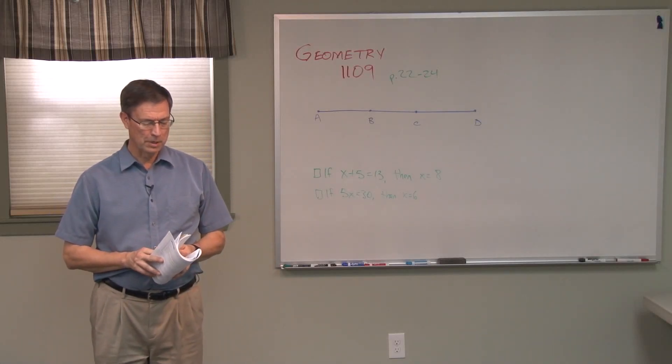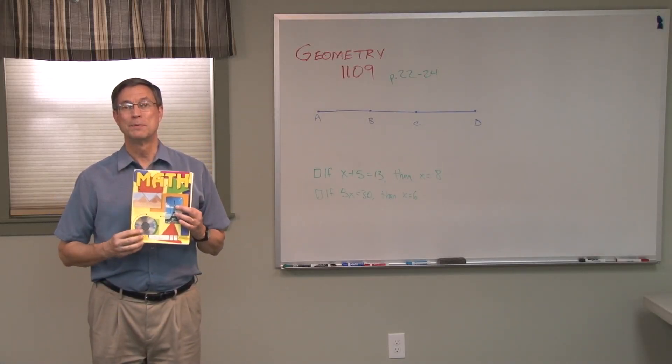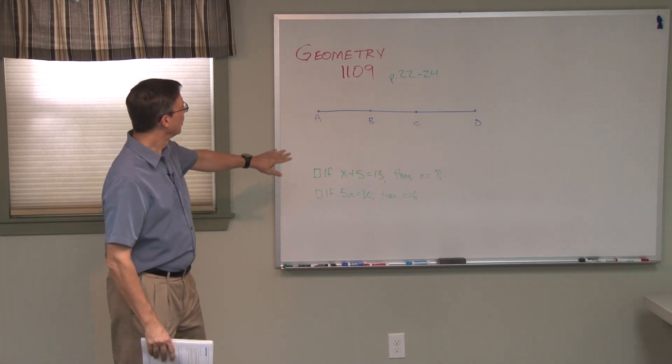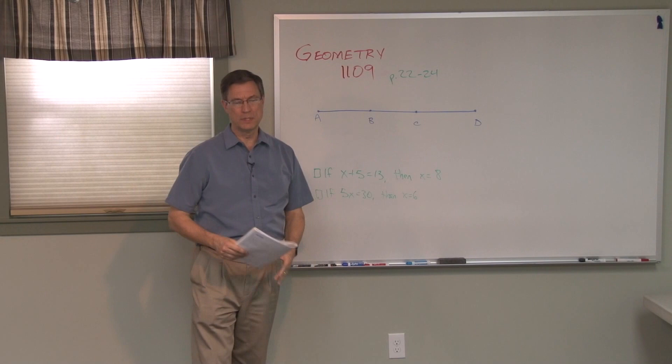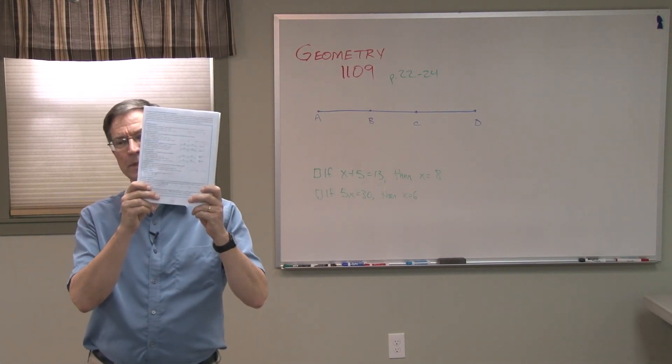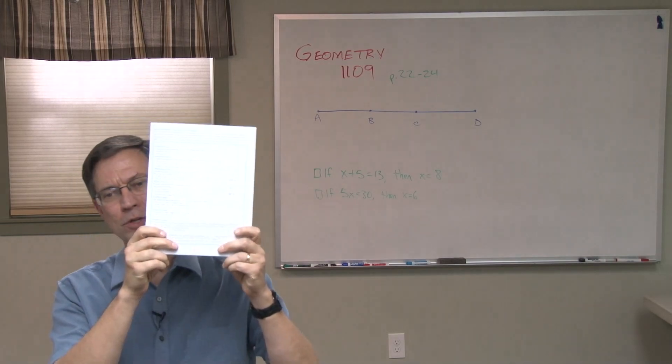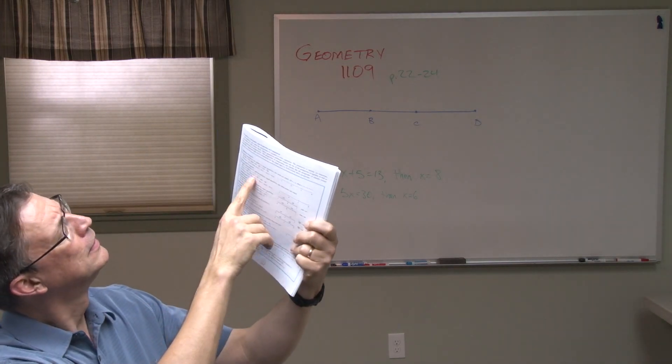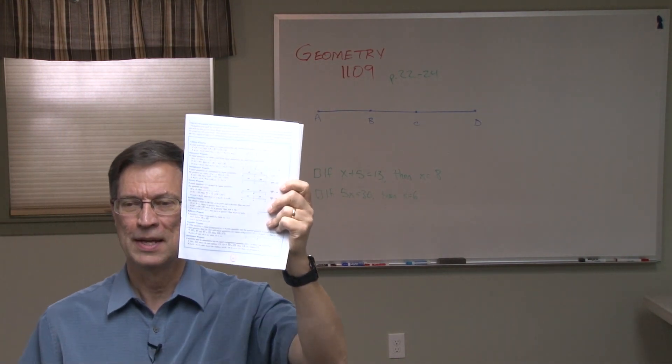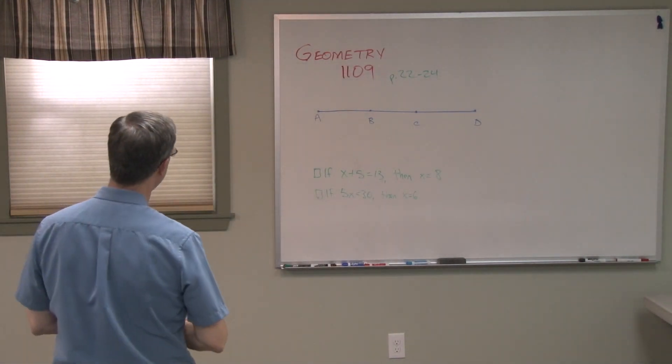All right, we're back. We're going to talk about geometry. This is PACE 1109 again, and I want to look particularly at pages 22 through 24. Looks like this. There's a whole page of properties of congruence. And we want to talk a little bit about what those mean.